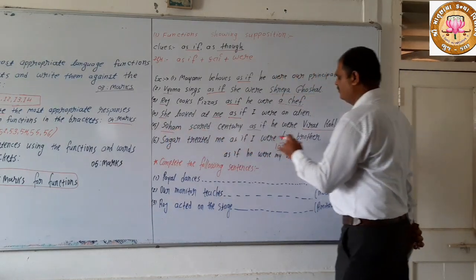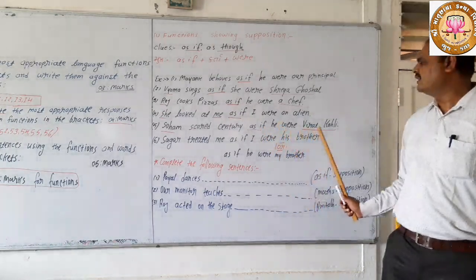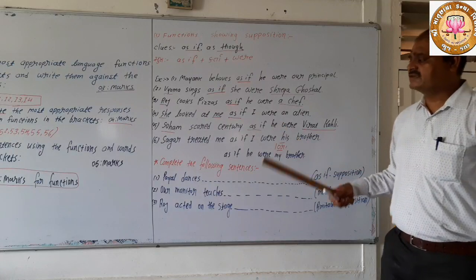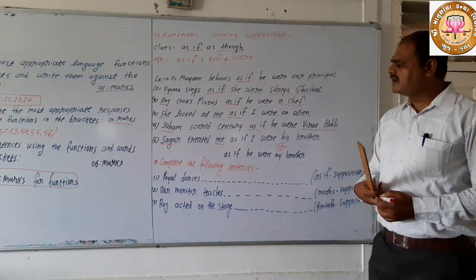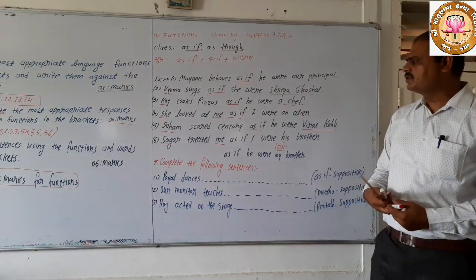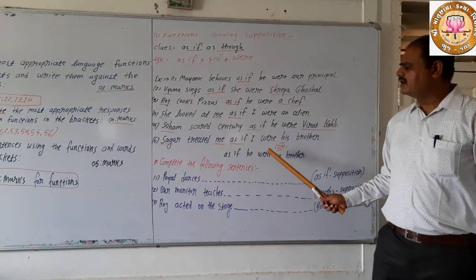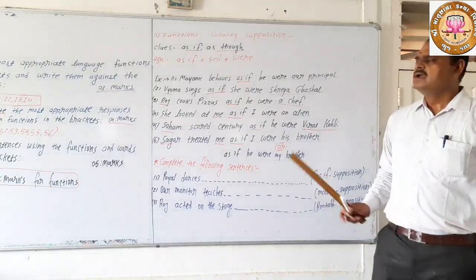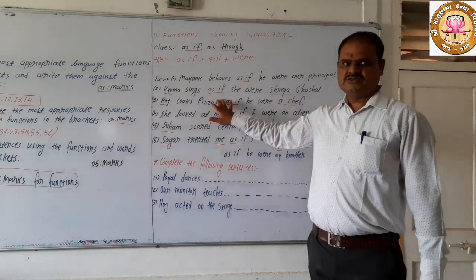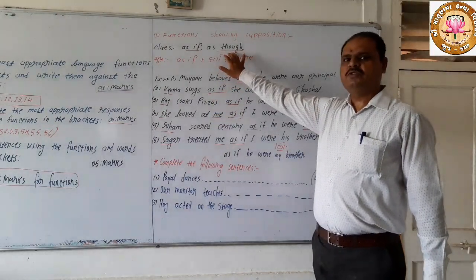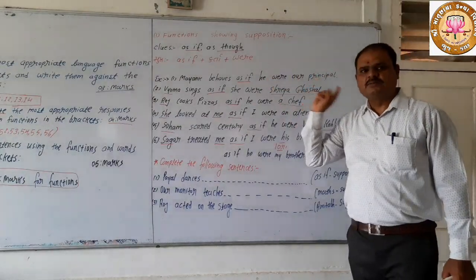In the real sense, there is no direct relation between both these players. The next sentence is: 'as if you were my brother.' Students, identify the sentence. 'As if both of you were my brother' — you will find the same sentence. The function here is: showing supposition.